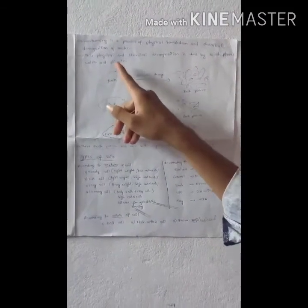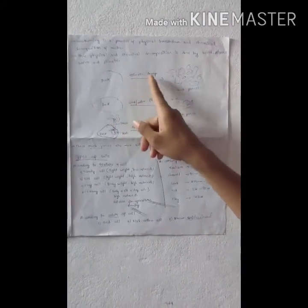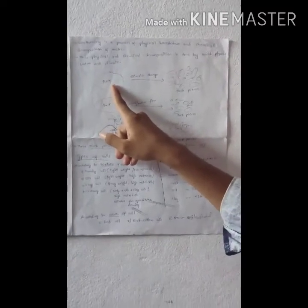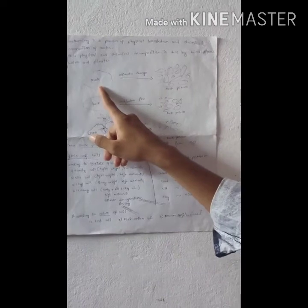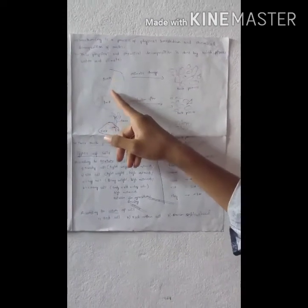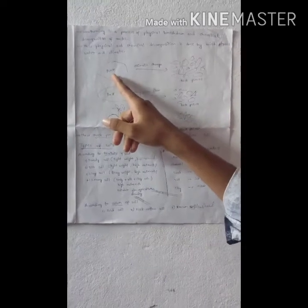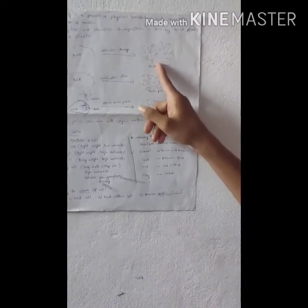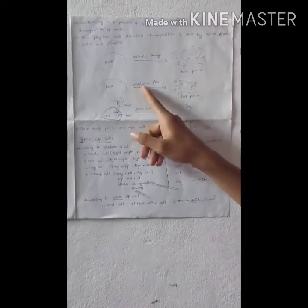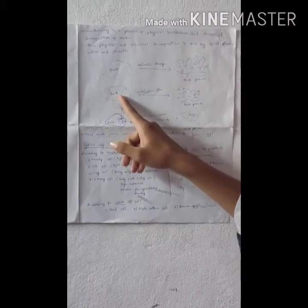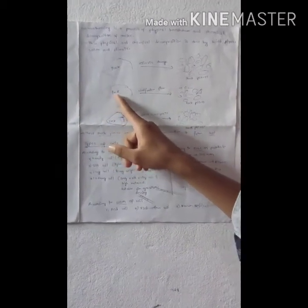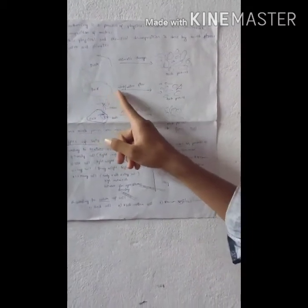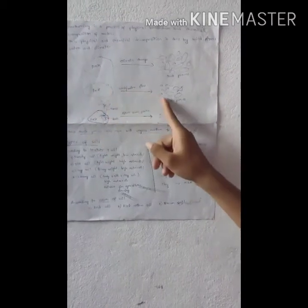First, how does weathering occur through climatic change? If a rock is present, in summer the rock will be heated and in winter it will cool. After some years, the continuous heating and cooling of the rock causes it to break into small pieces. Similarly, wind flowing at heavy speed and water flow can also cause breaking of rocks.